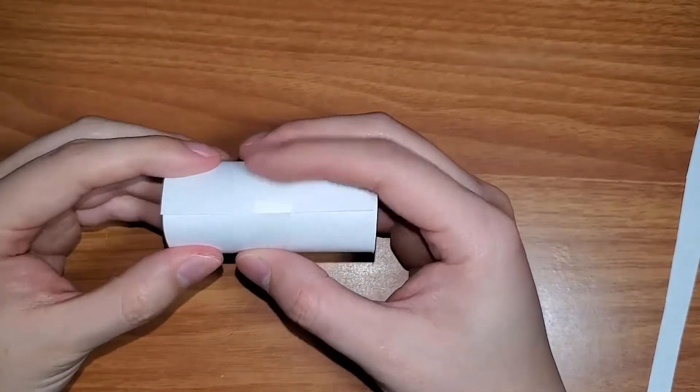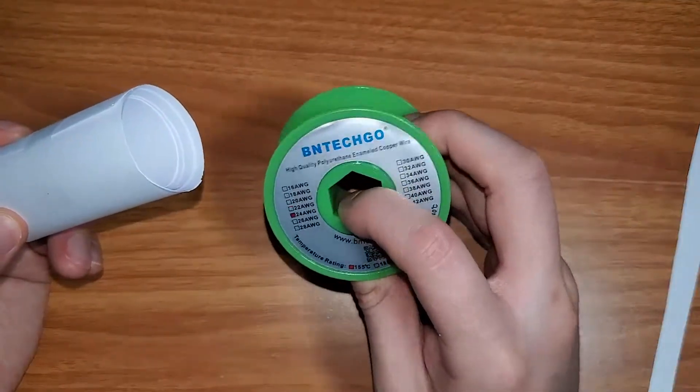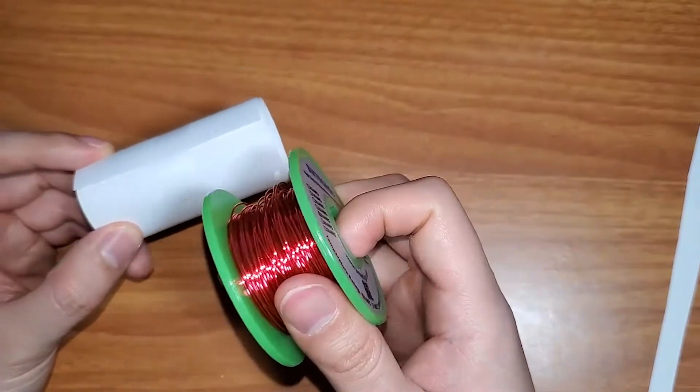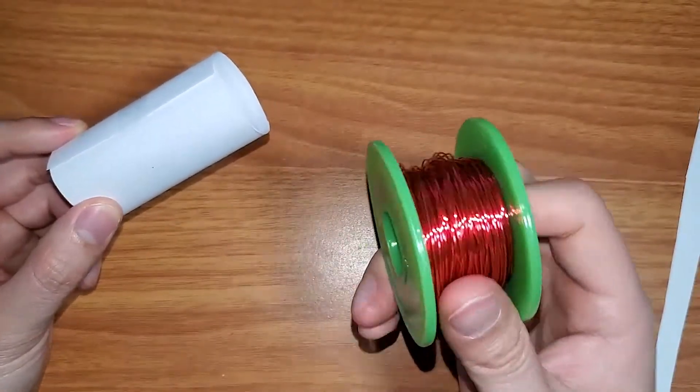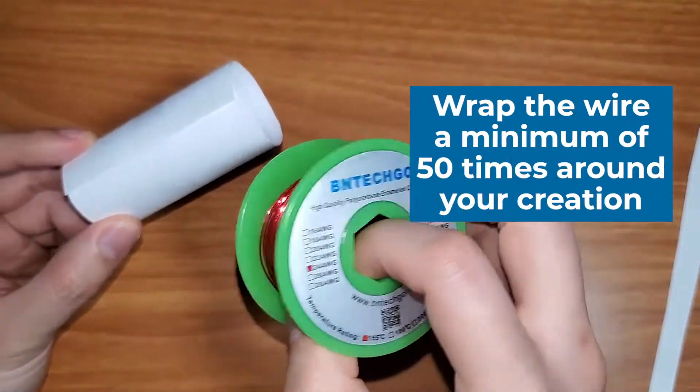So with our magnets all rolled up, what we're going to do is we're going to take some of our wire here and we're going ahead and start wrapping it around our cylinder. I'm going to wrap it around 80 times. I would recommend a minimum 50 if we're going to be using this, especially at 24 gauge.